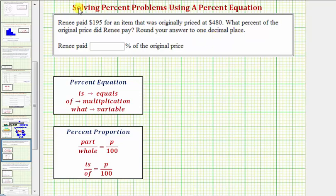To determine the percent paid, we want to answer the question: 195 is what percent of 480? There are several ways to answer this question. We'll talk about the more formal ways using the percent equation and percent proportion in just a moment. But if we can represent the amount paid as a fraction comparing the part to the whole, we can convert that fraction to a decimal and then to a percent.